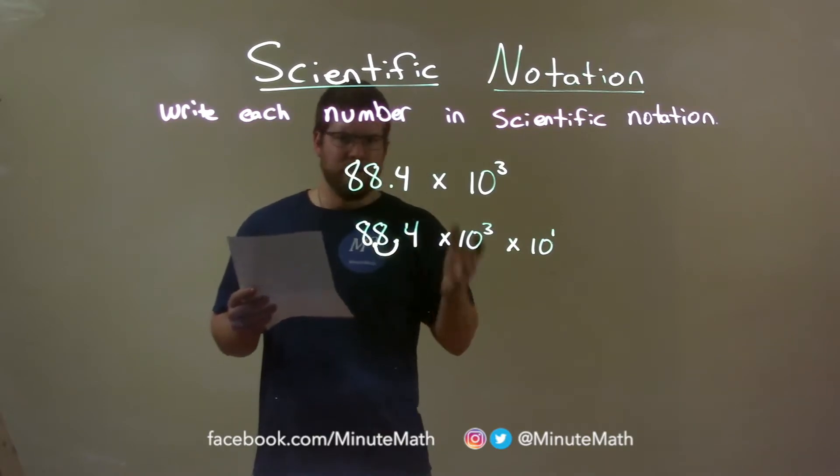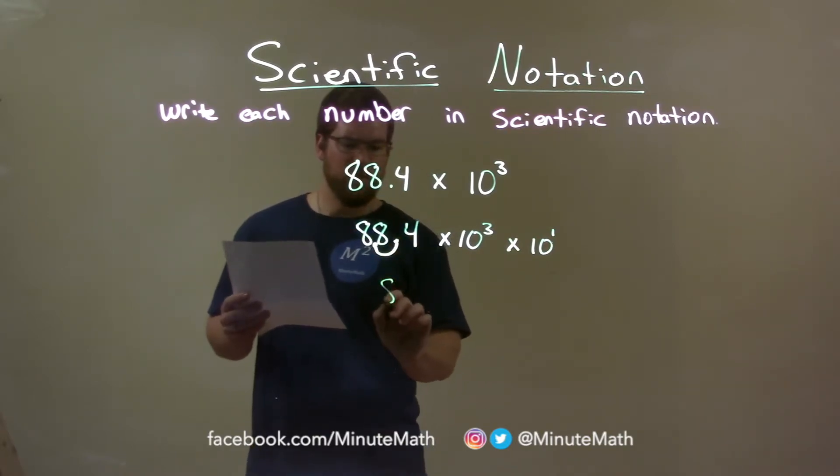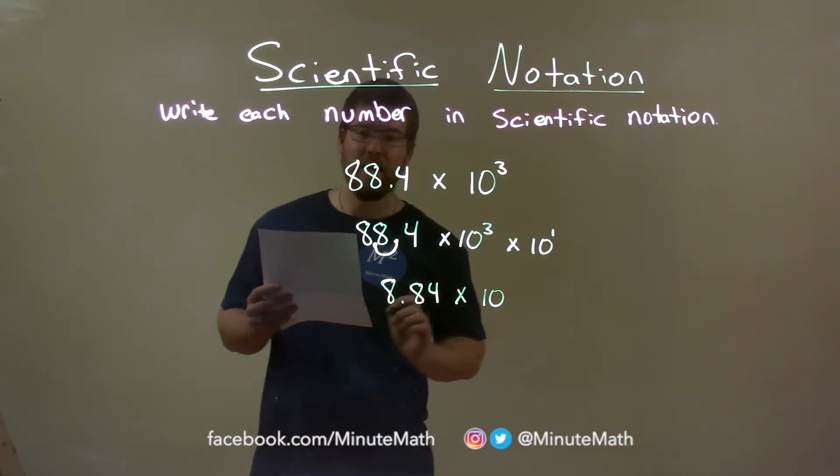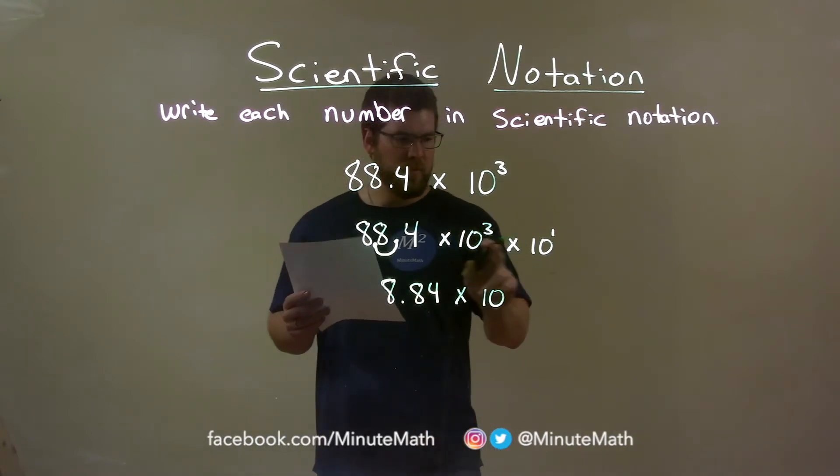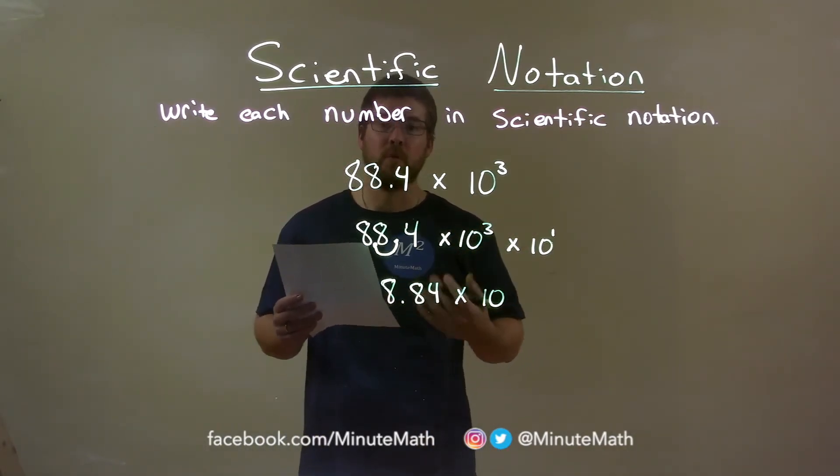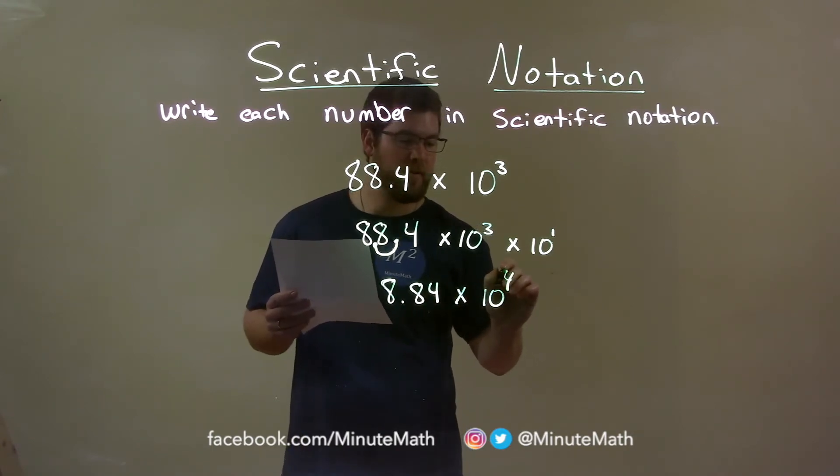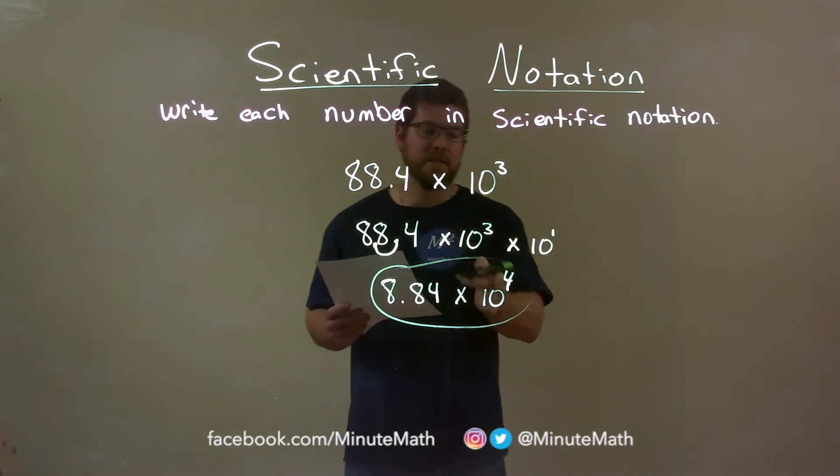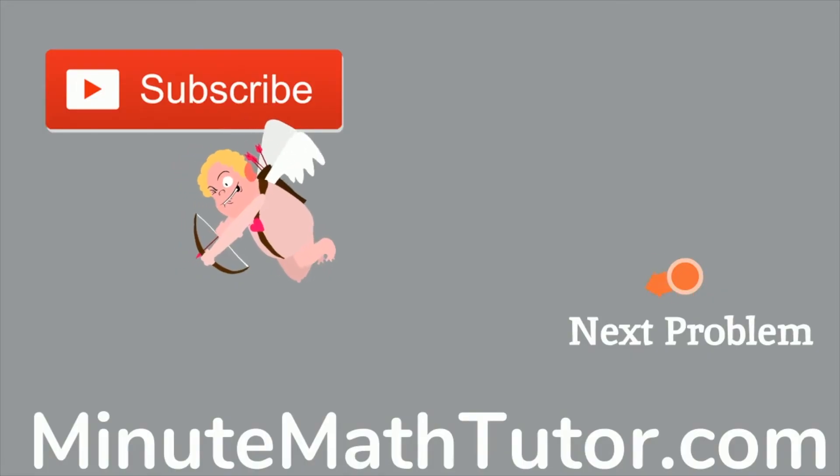So now we can simplify and write our final answer. We have 8.84 times 10, and we have to put an exponent there. Well, when we multiply the same base, we have to add the exponents, and 3 plus 1 is 4. So my final answer here is 8.84 times 10 to the fourth power.